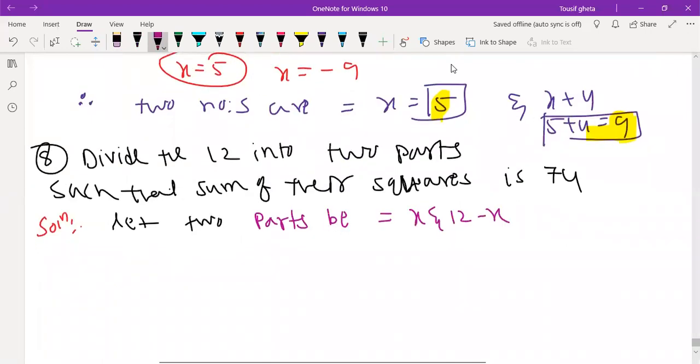Last time I gave you same question right. Now such that sum of their squares. Sum of their squares is x plus 12 minus x. Sum of their squares means you should take square and square here.